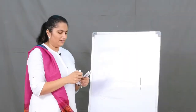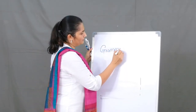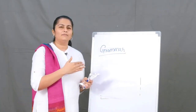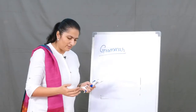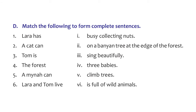We are going to learn some grammar. We'll continue to learn how to make proper sentences. If you take a look at exercise D — 'match the following to form a complete sentence' — on the left you can see a few sentences which are not complete. Let's complete them with the half-sentences given on the other side.